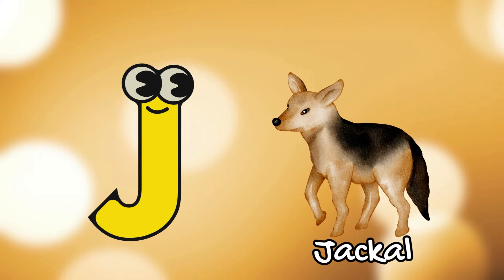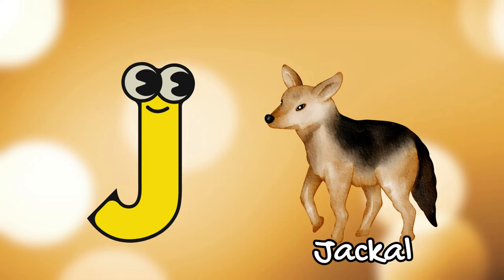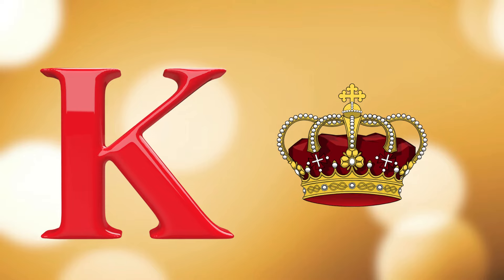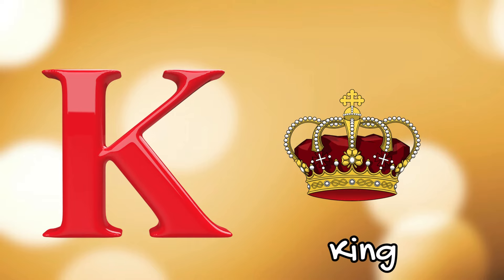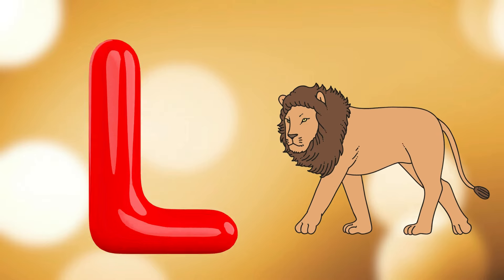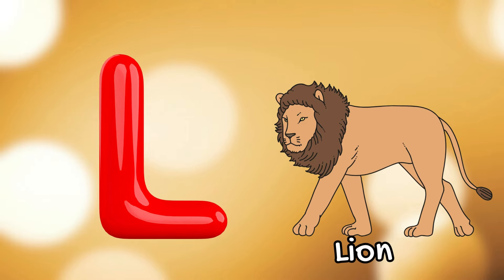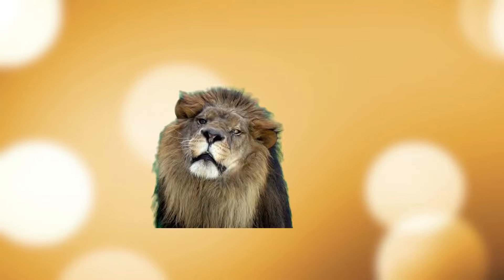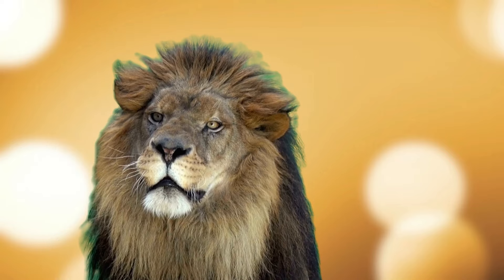I is for ice, i-i-ice. J is for jackal, j-j-jackal. K is for king, k-k-king. L is for lion, l-l-lion.